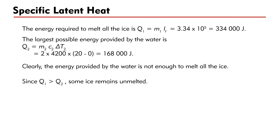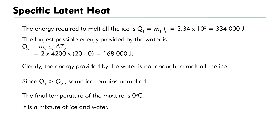Since Q₁ is greater than Q₂, some ice remains unmelted. The final temperature of the mixture is 0 degrees Celsius — it is a mixture of ice and water.